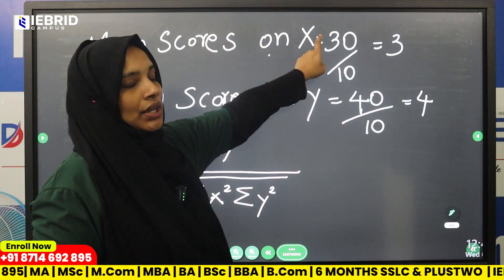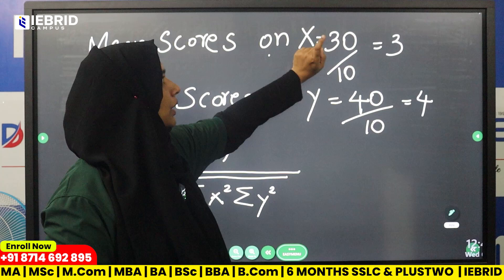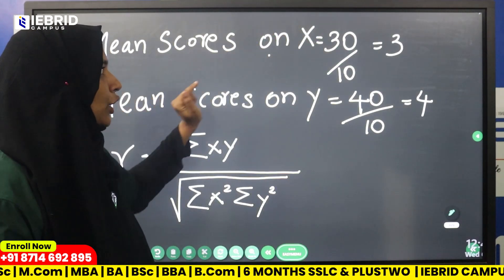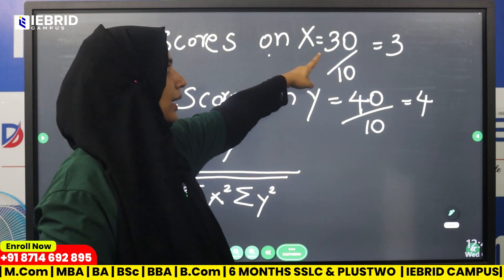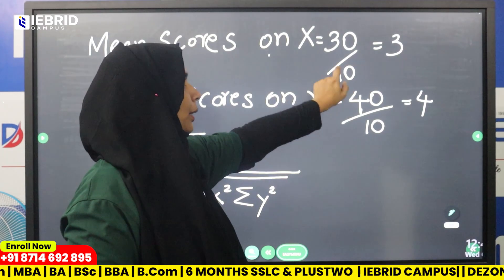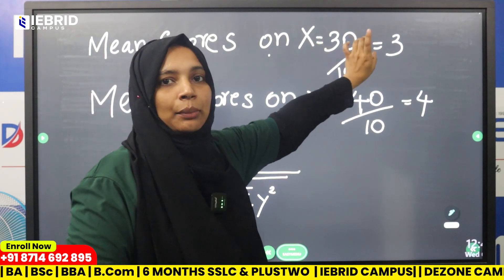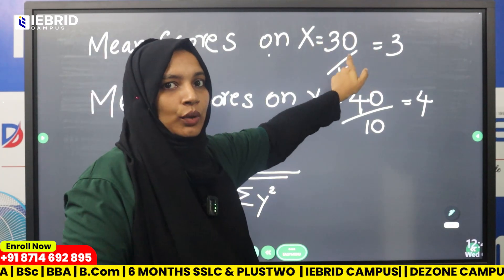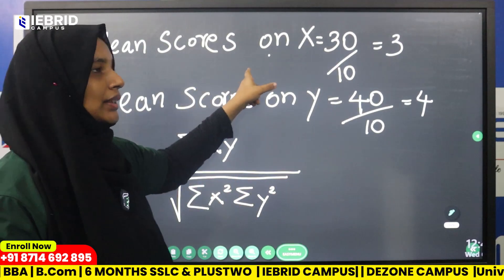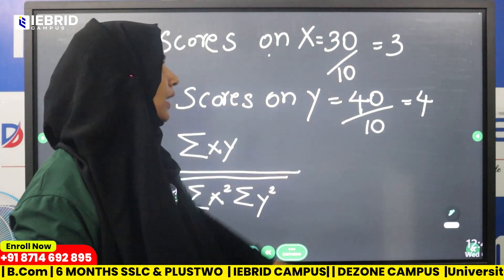Mean is summation x divided by n. Summation x is 30, and n is 10. So 30 divided by 10 gives us 3. The mean of x is 3.